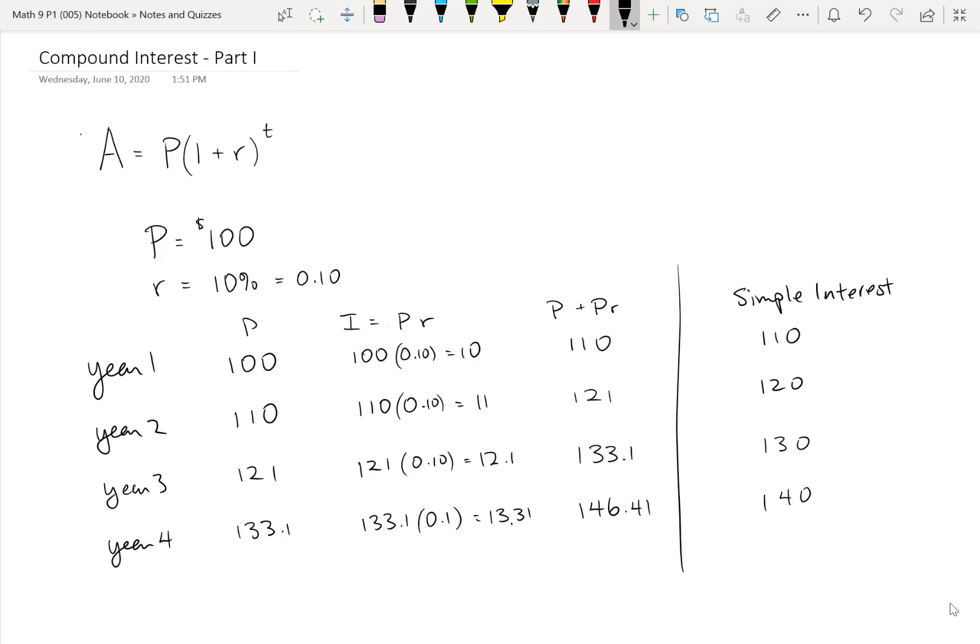Okay, so is it the case that we have to do, if we want to find out what's the value of our account after 10 years, do we have to basically make a table like this and calculate the interest every year and figure out what the new starting balance is? No, there's a much, much shorter way of doing it. And we can see what's going on by taking a look at what I wrote at the top of the columns. So that final balance was the principal plus the principal times the rate. And we can take out or factor out the principal there and just write this as the principal times 1 plus the rate.